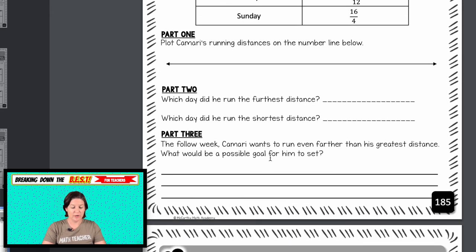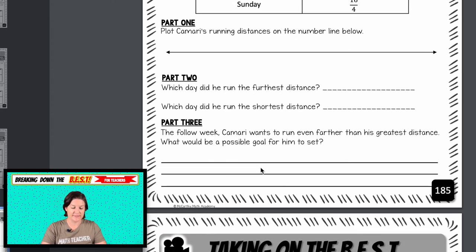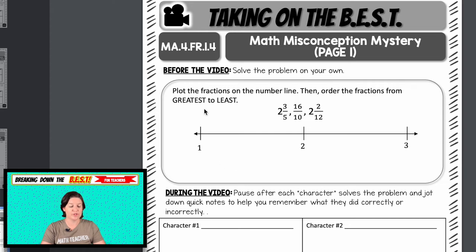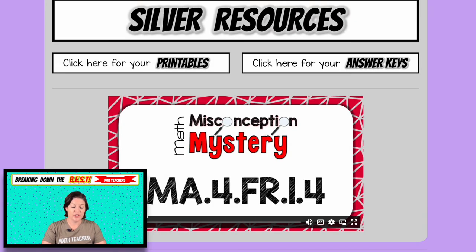Part three says the following week Kamari wants to run even farther than his greatest distance. What would be a possible goal for him to set? All right. And then finally, the last task for the silver membership is the math misconception mystery. This is a video lesson. So if you go back to that silver page, you just click play right there and I will walk your students and you through the whole thing.